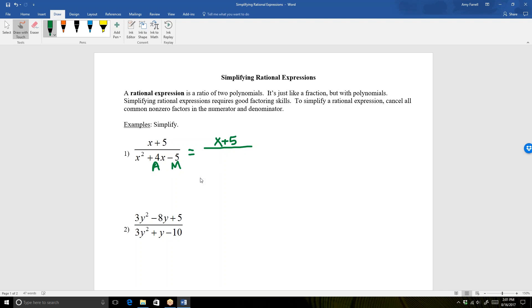But the trinomial in the denominator can be factored. Because my coefficient of x squared is 1, I'm going to look for two numbers that add to 4 and multiply to negative 5. And those numbers are positive 5 and negative 1. That means that the trinomial will factor as x plus 5 times the quantity x minus 1.